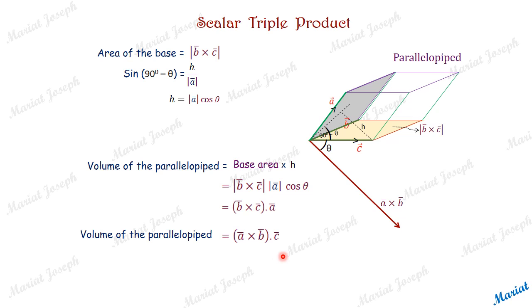In fact, numerically all of these combinations — taking vectors A, B, C with one dot and one cross — will be equal. But remember: always give priority to the cross product first; otherwise the expression becomes meaningless.